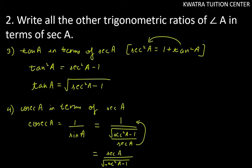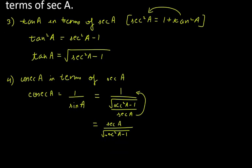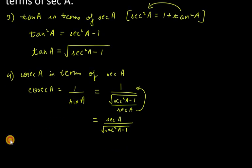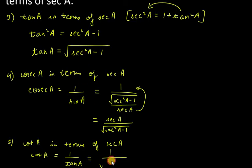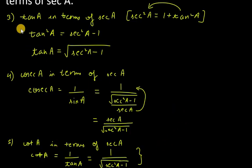The last part is cot A in terms of sec A. Since cot A = 1/tan A, and tan A = √(sec²A − 1), we get cot A = 1/√(sec²A − 1). That is the answer for cot A in terms of sec A, and this is the end of question number 2. Thank you for watching, please like, share, and subscribe.